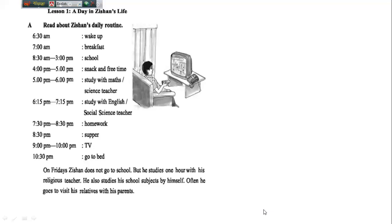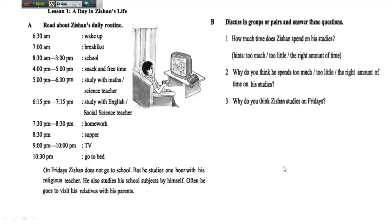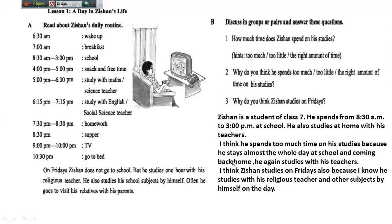So dear learners, what do you understand from Jisan's daily routine? Let me discuss some points. There are three questions for you. Number one: How much time does Jisan spend on his studies — too much, too little, or the right amount? Number two: Why do you think so? And number three: Why do you think Jisan studies on Fridays? Think about these questions. I think you have got the answers, and I want to share them with you.